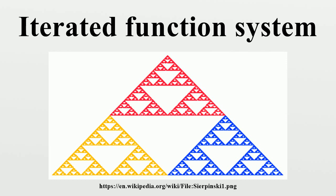The collection of functions generates a monoid under composition. If there are only two such functions, the monoid can be visualized as a binary tree, where at each node of the tree, one may compose with the one or the other function. In general, if there are k functions, then one may visualize the monoid as a full k-ary tree, also known as a k-ly tree.